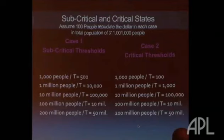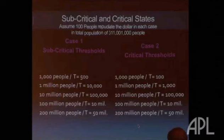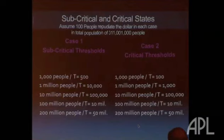Case one — we're subcritical. Assume 100 people repudiate the dollar. Here's what happens: 100 people reject the dollar. The next 1,000 people had a threshold of 500 — in other words, if 500 people reject the dollar, they would reject it also. Their critical threshold is 500. But what happened is only 100 people rejected the dollar. It wasn't 500. It fell below the critical threshold, so nothing else happened. That phenomena died out right at that level.